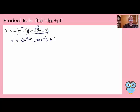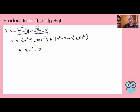Then plus g, which is x squared plus 7x plus 2, times the derivative of f. The derivative of that is 3x squared. That's the calculus part — now we have to multiply it out. x cubed times 2x is 2x to the fourth, plus 7x cubed, then minus 1 times 2x is minus 2x, minus 7. Over here we distribute the 3x squared: plus 3x to the fourth, plus 21x cubed, plus 6x squared.